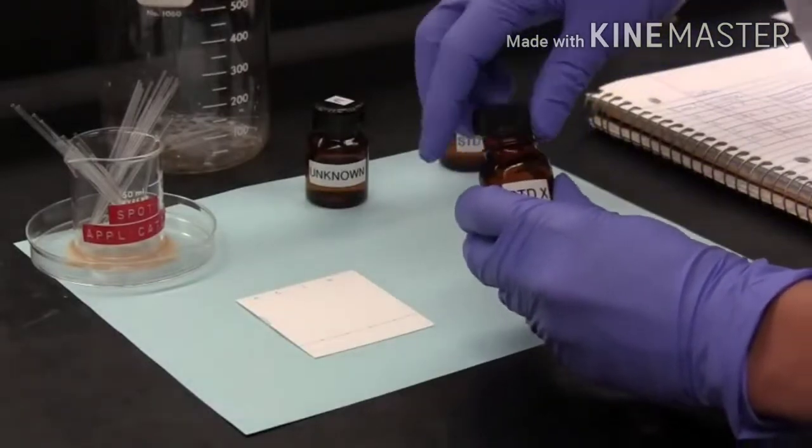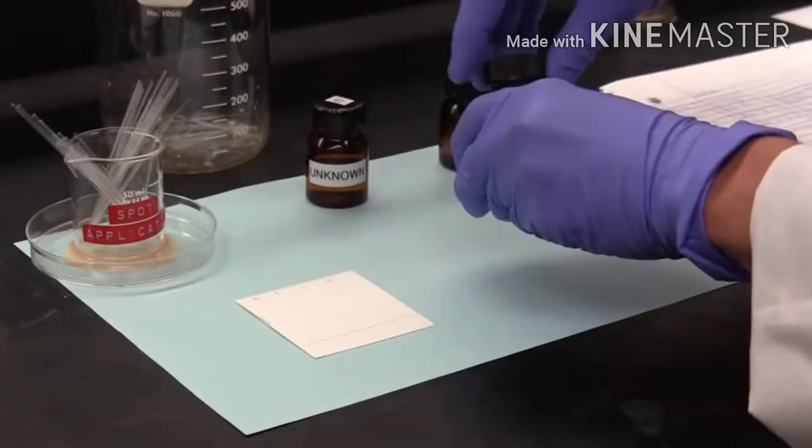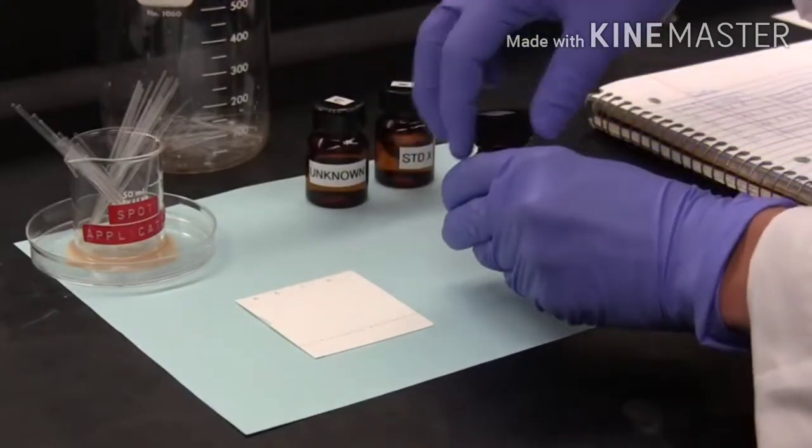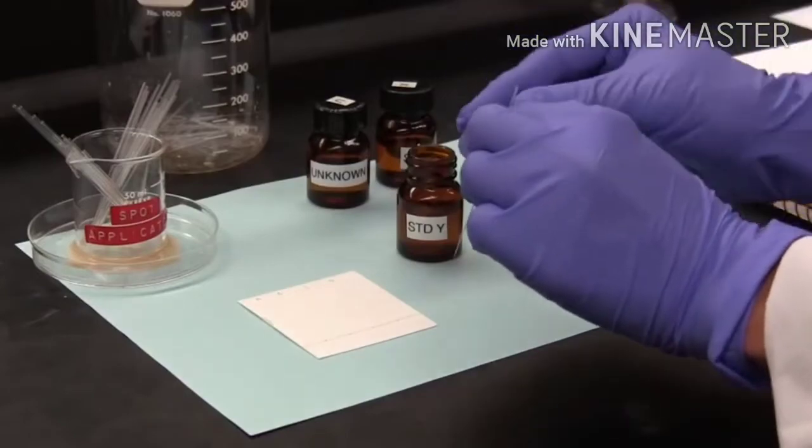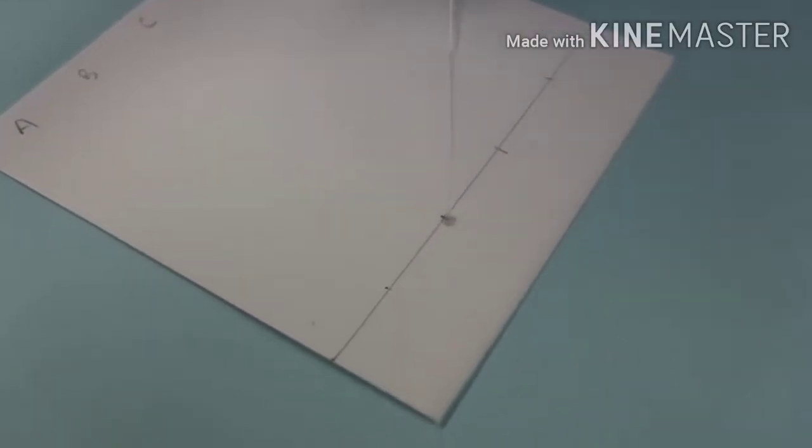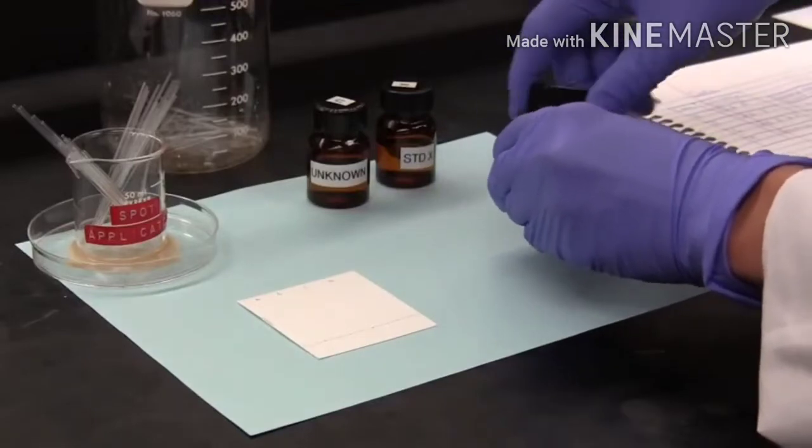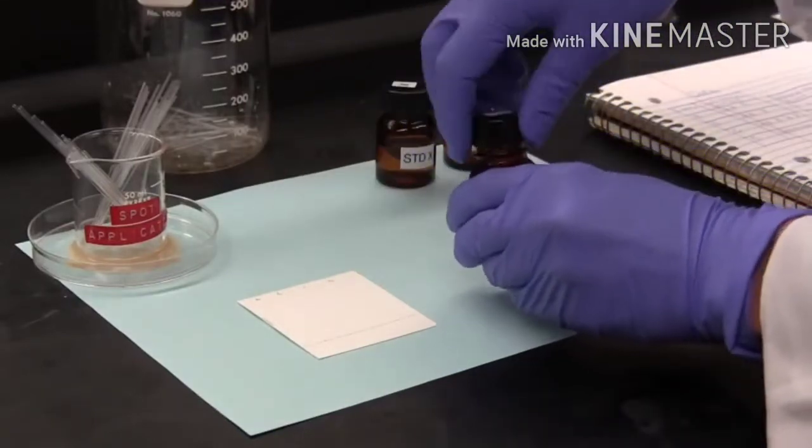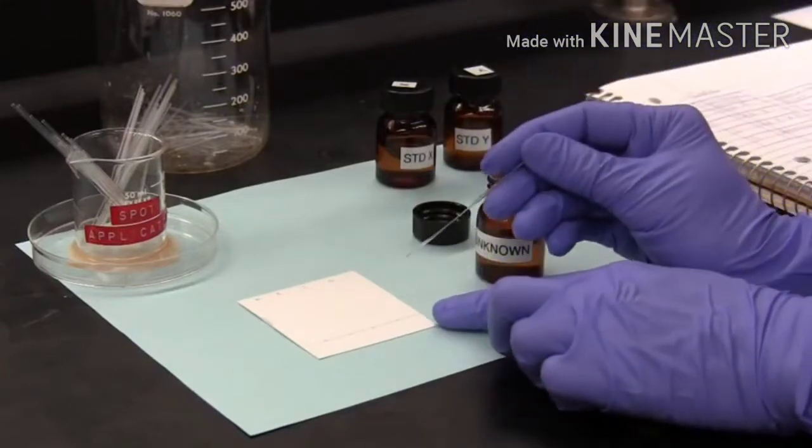The first part of the TLC analysis is to spot the plate. We use a capillary applicator to apply a spot of standard X at the origin in lane A, and again in lane C. Now in lane B at the origin, we apply a spot of standard Y, and once more at the origin in lane C. Note how we use a clean capillary applicator with each solution. This is to avoid cross-contamination between the lanes.